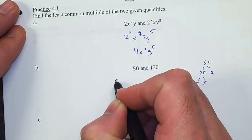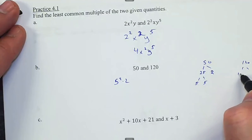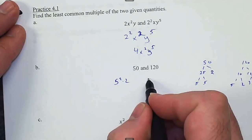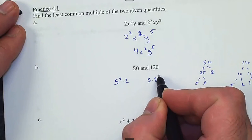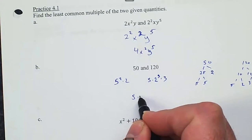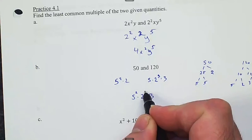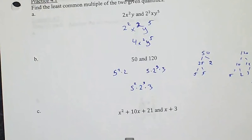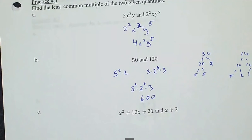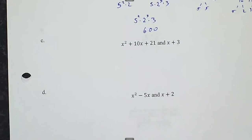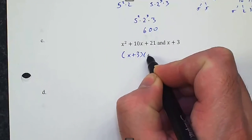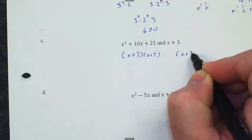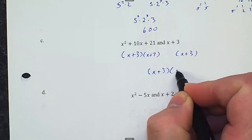For 50 and 120: 50 factors as 5 squared times 2, and 120 has a 5, three 2's, and a 3. We need 5 squared, 2 cubed, and 3, so the LCM is 25 times 8 times 3, which is 600. For the polynomial pair with x plus 3 and x plus 7, the LCM is simply (x + 3)(x + 7).